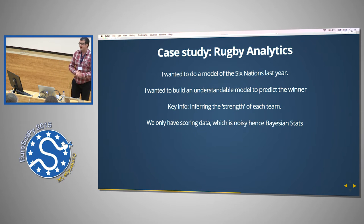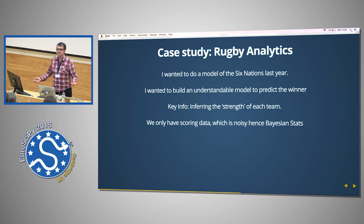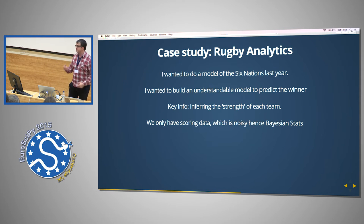So, I'm a rugby fanatic. I wanted to do a model of the Six Nations last year. If any of you don't know what rugby is, it's just a game where people run into each other and collapse. I wanted to build an understandable model to predict a winner. So there were certain latent variables I wanted to get in my modelling framework, but I had no measurement for them whatsoever. I just had what was publicly available information. Unfortunately, I'm not allowed to put sensors on professional rugby players and get these kind of data that I really want.